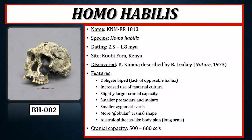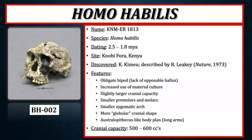Homo habilis dates between about 2.5 to 1.8 million years ago, still restricted to the continent of Africa; this particular fossil was uncovered in Kenya. Homo habilis is likely an obligate biped due to the lack of an opposable hallux, transitioning from habitual to obligate bipedalism. Key changes include increased use of material culture, a cranial capacity of roughly 500 to 600 cc's, and more generalized dentition with smaller premolars and molars.